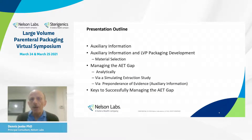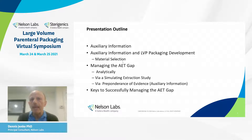Essentially, we'll talk a little bit about what auxiliary information is, how it can be used to facilitate the development of packaging, specifically with respect to material selection. Then we'll get back into this topic of the AET gap — the difficulty with which we can detect compounds in an extract or in a drug product down to the levels required by LVP. And specifically, we're going to look at three ways to manage that gap.